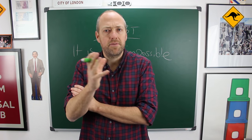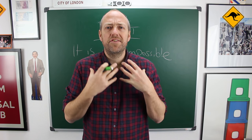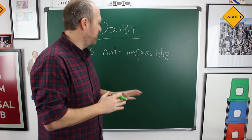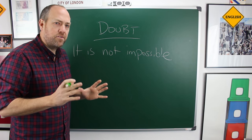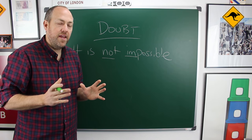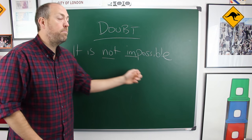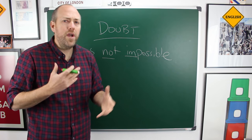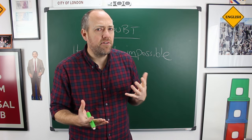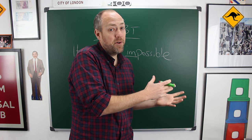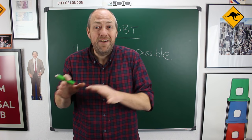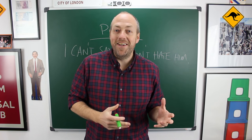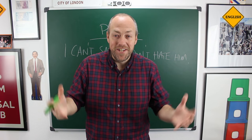The first reason you might want to use a double negative is to express doubt — to say that you're not sure about something. For example: 'It is not impossible.' You could say 'it is possible,' but when we say 'it is not impossible' we are expressing some doubt — I don't think it's impossible, but I'm not sure if it is possible.